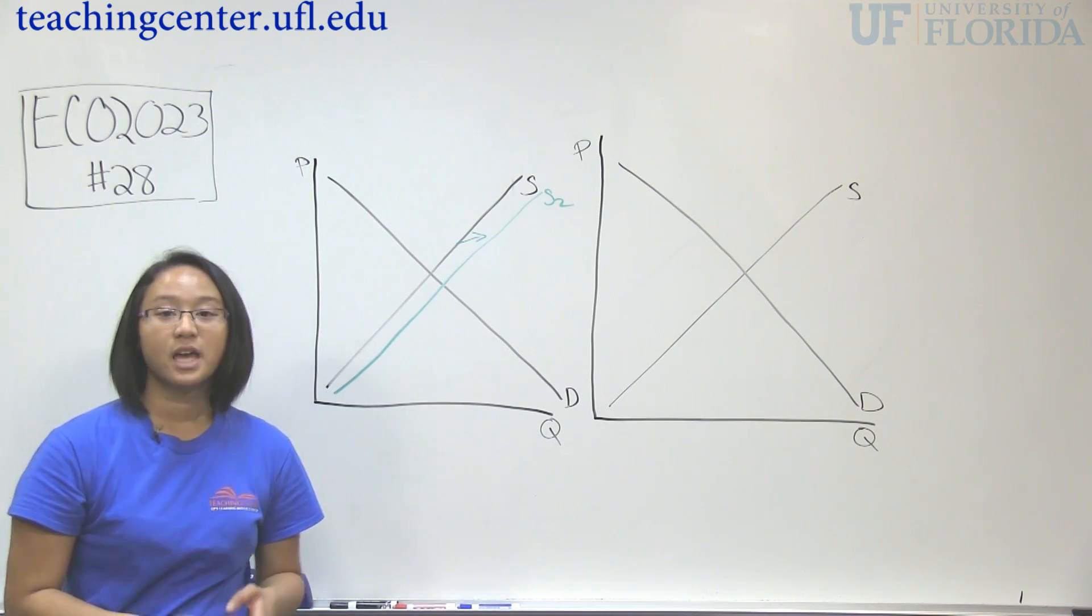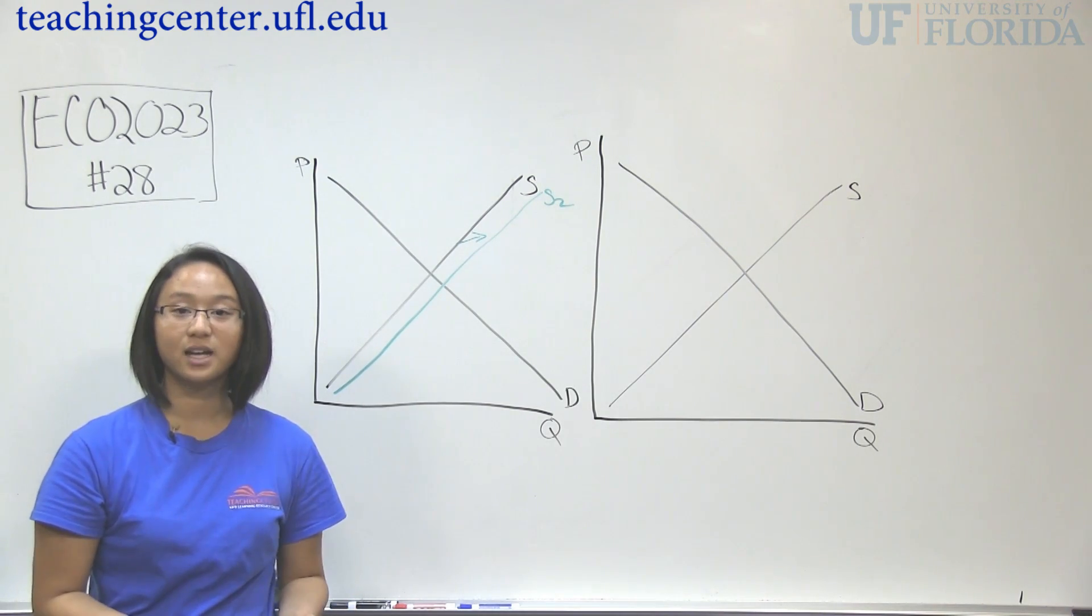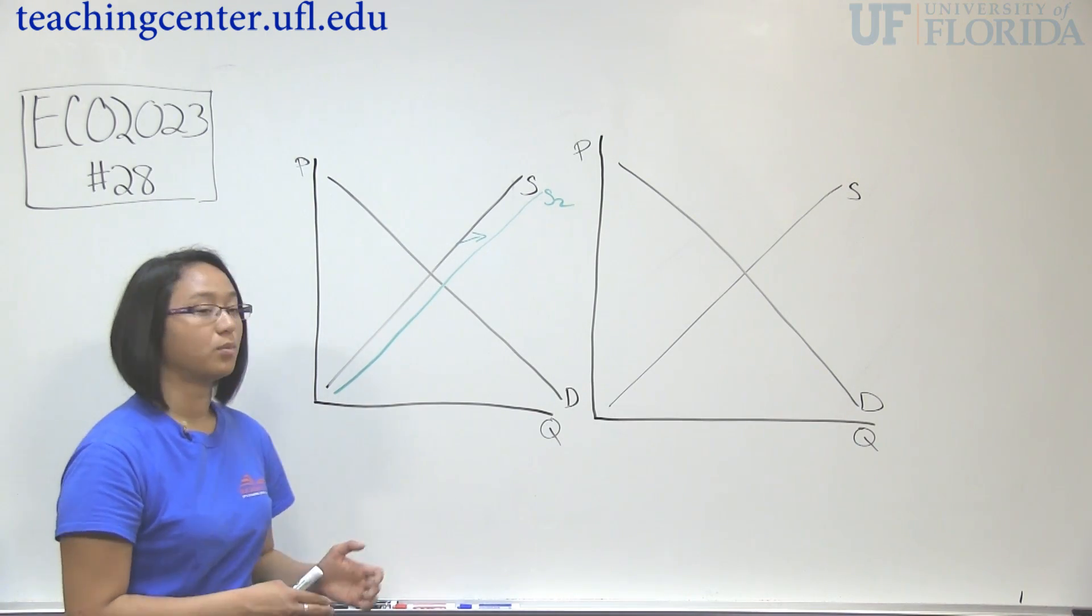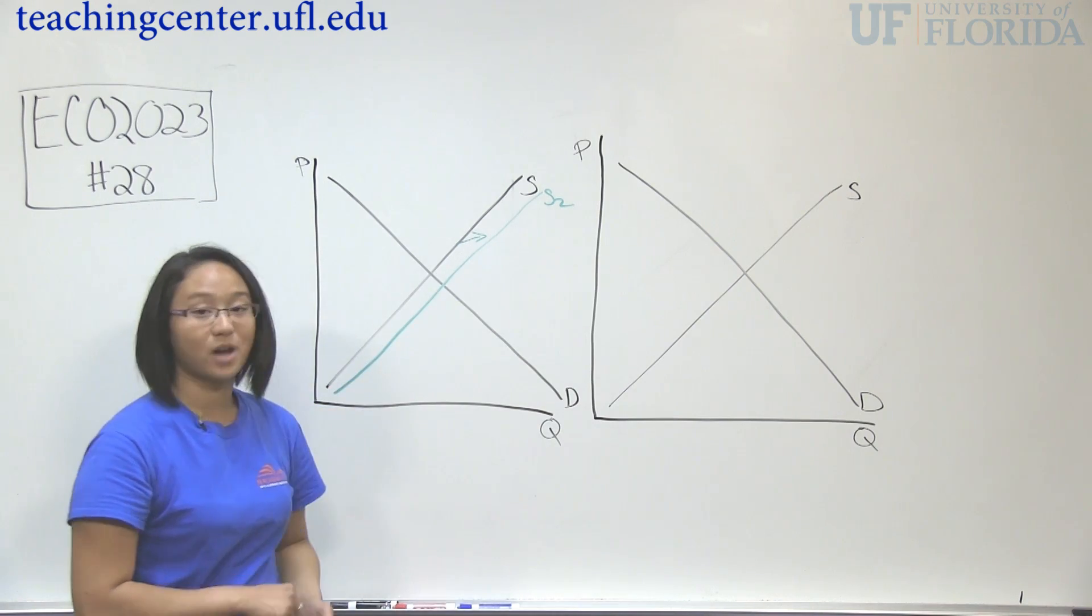And supply will always increase whenever it's become easier to produce. So here, technology increased. If costs go down, then it becomes cheaper to produce, so supply would still shift to the right. If the number of suppliers increases, then you have more capacity to produce, so it would also shift to the right as well.